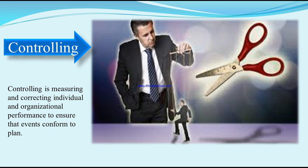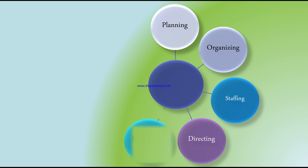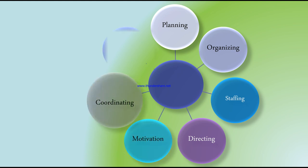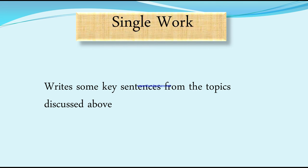Controlling is measuring and correcting individual and organizational performance to ensure that events conform to plan. So we have: planning, organizing, staffing, directing, motivation, coordinating, and controlling. These five functions form the management cycle because it starts with planning and ends with controlling.